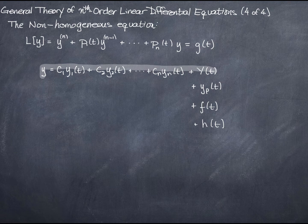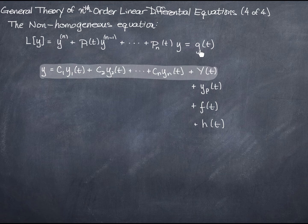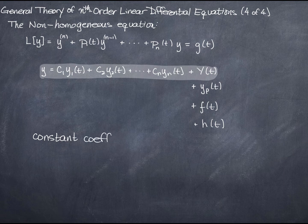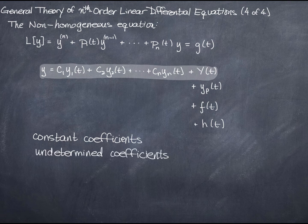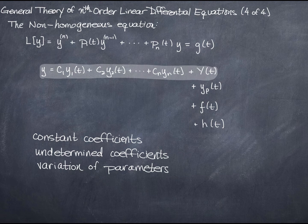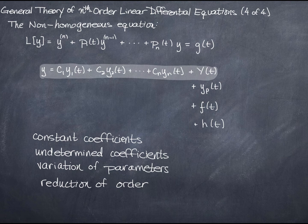This is what we call the general solution — the general solution to a non-homogeneous differential equation in this form. We have several approaches we could take. We could assume it has constant coefficients. If it doesn't have constant coefficients, then we can use undetermined coefficients or the method called variation of parameters — we discussed both of those in the second unit. We also have the tool of reduction of order, which works in some cases as well.